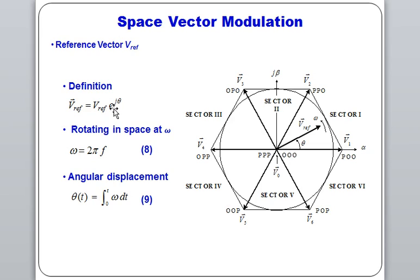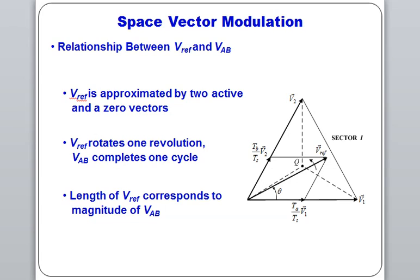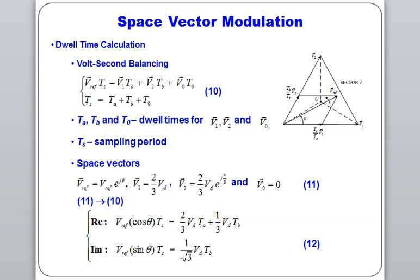The change in angular displacement is the integration of omega·dt. The reference voltage is defined using two active vectors and one zero vector. Taking two active vectors v1 and v2 with two particular switching states, we define a zero vector at zero. Dwell times ta and tb indicate how long v1 and v2 are present respectively, and T0 is the zero vector time. The total sampling period ts satisfies: ta + tb + t0 = ts.